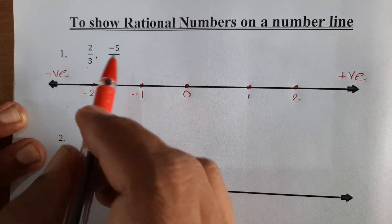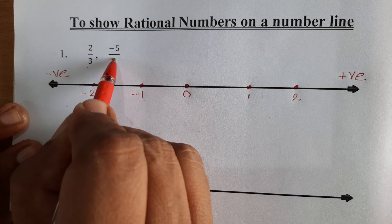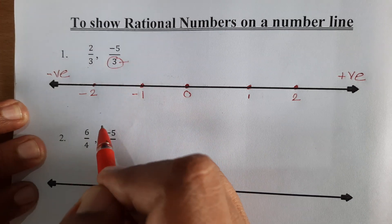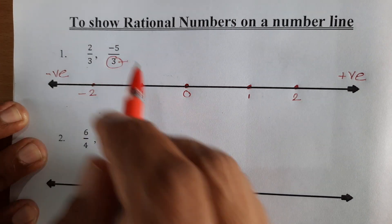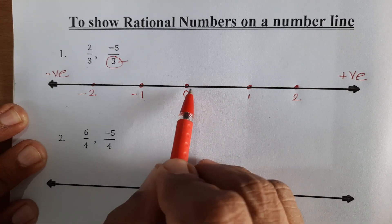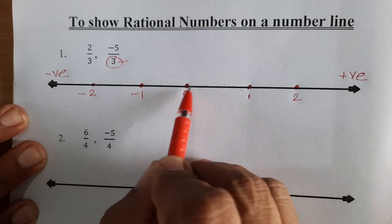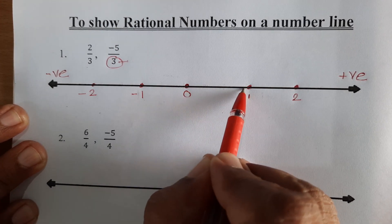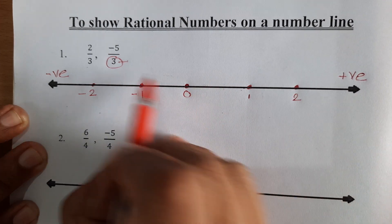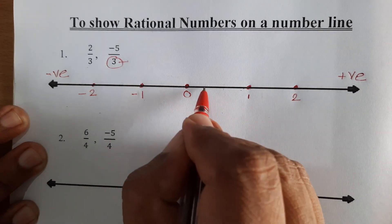Now, look at the denominator. The denominator is 3 here. So we divide each unit distance into 3 equal parts — in 3 equal parts.